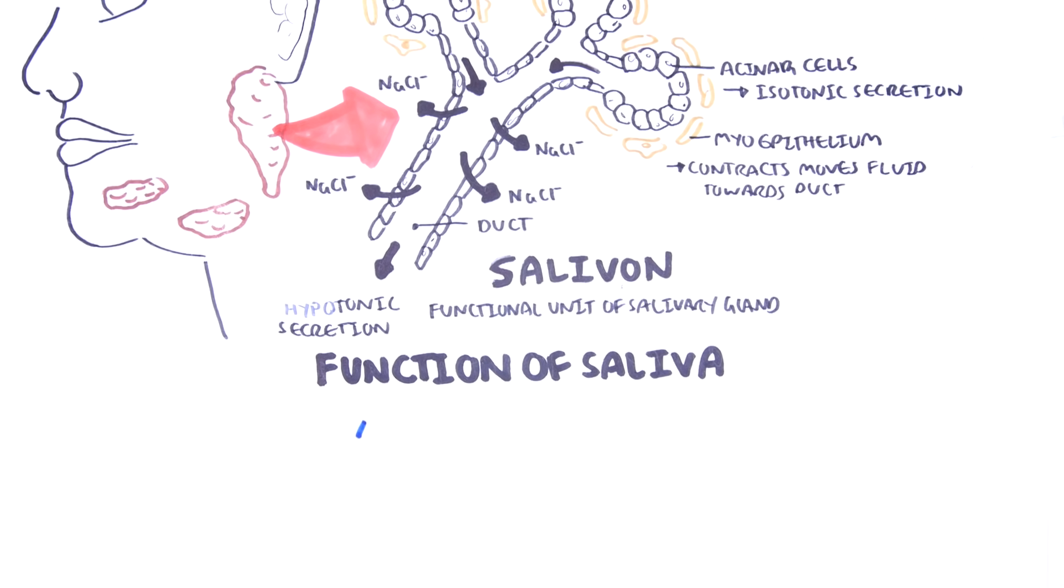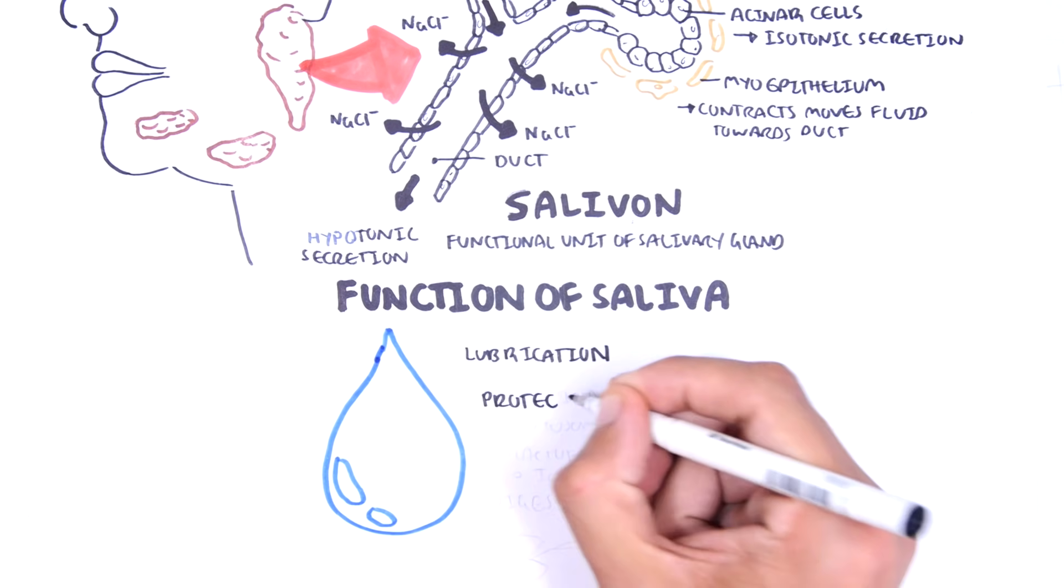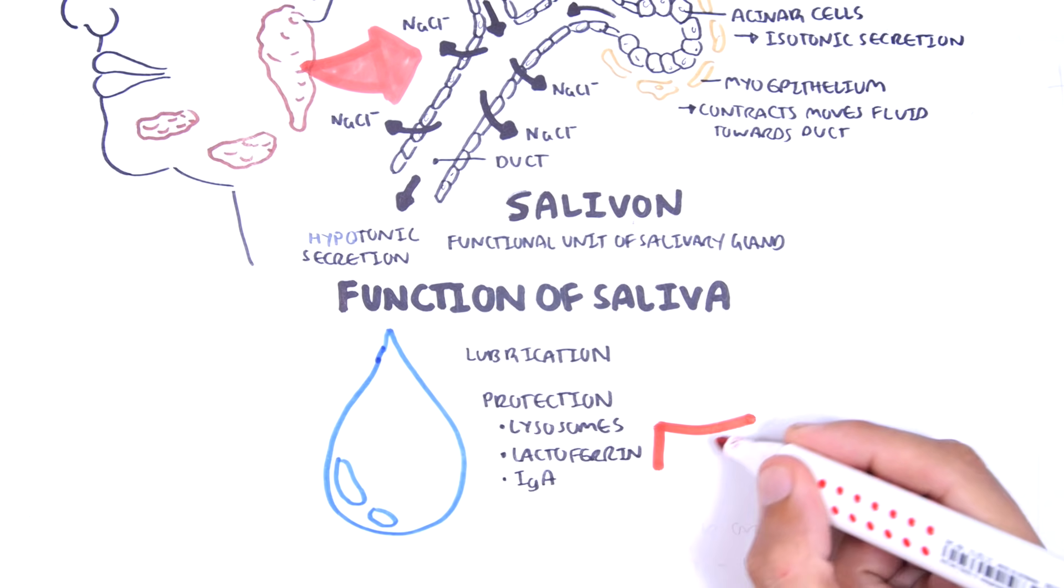The saliva has three main functions: lubrication, protection, and there are a few ways. One way is that it contains lysosomes which attack the bacterial cell walls.